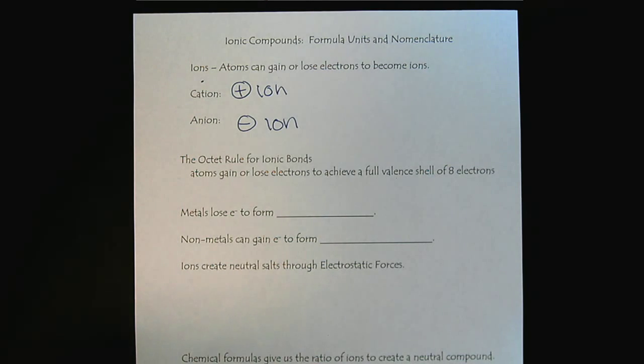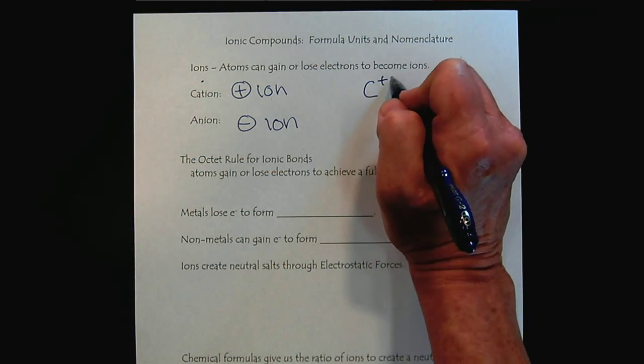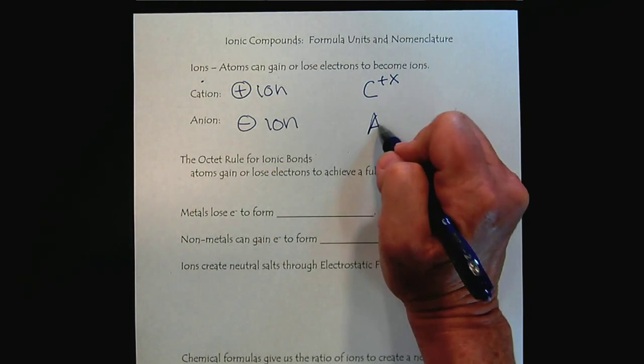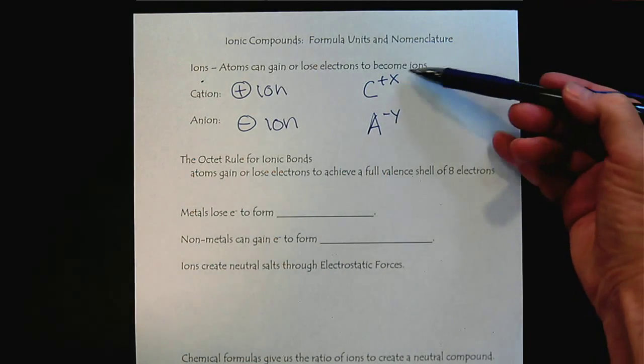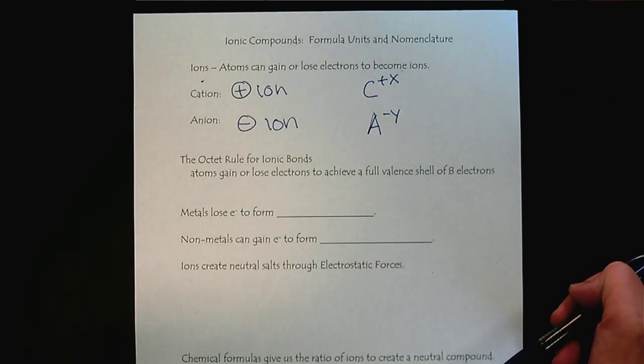And so when we have a neutral atom, there is no charge. Remember that when we have a cation forming or an anion forming, that the top right corner, the right superscript, is when we indicate the charge of an element when it is in its ionic form.